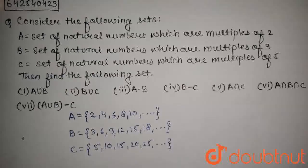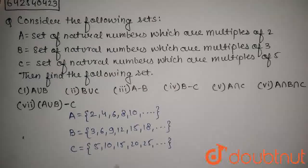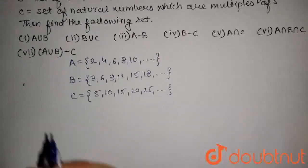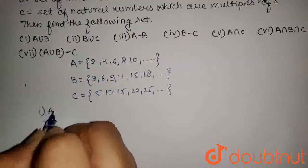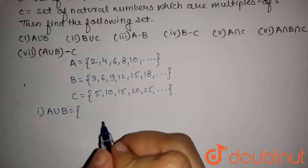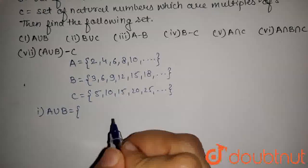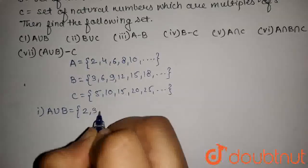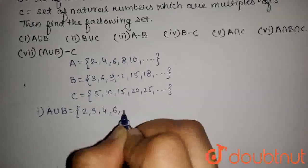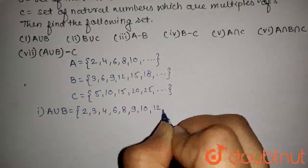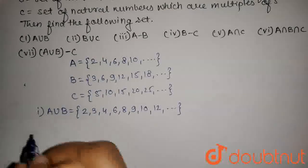Now we have to find the following sets. The first part is to find A union B. A union B will contain the set of natural numbers which are multiples of 2 or 3. So this set will contain 2, 3, 4, 6, 8, 9, 10, 12, and so on.